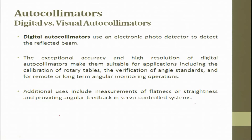An autocollimator is a device in which we use light. This light hits a mirror, which is placed on a surface where you want to do the measurement. Based upon the reflection, we capture it back and try to figure out from the interference pattern or from the shift in the cross wire. From that shift, we try to calibrate the angular deviation which is on a surface.